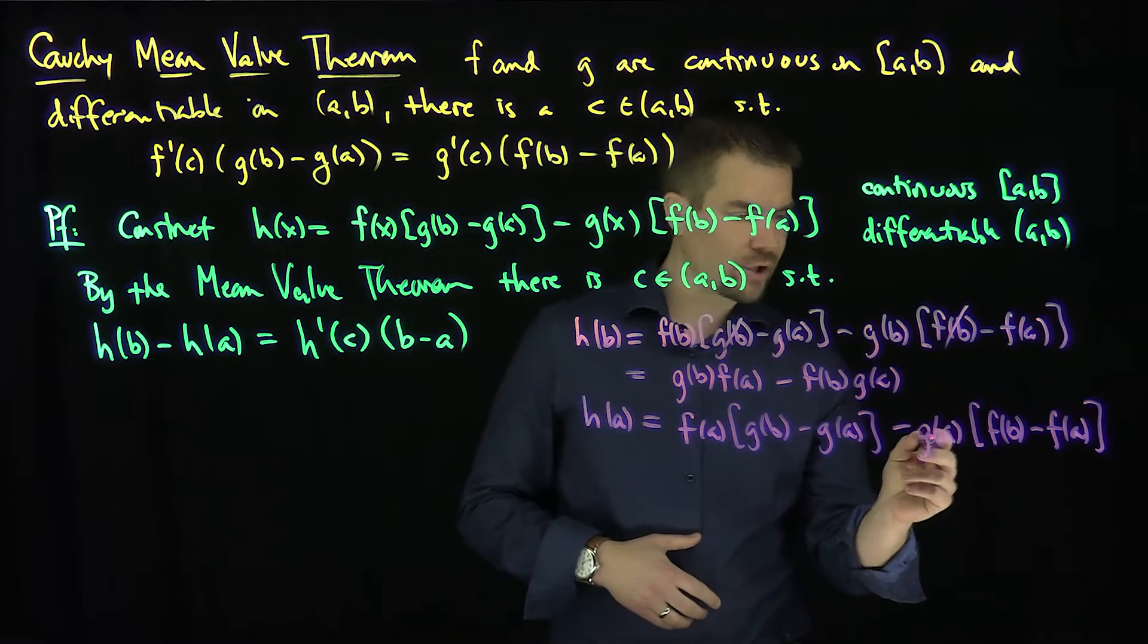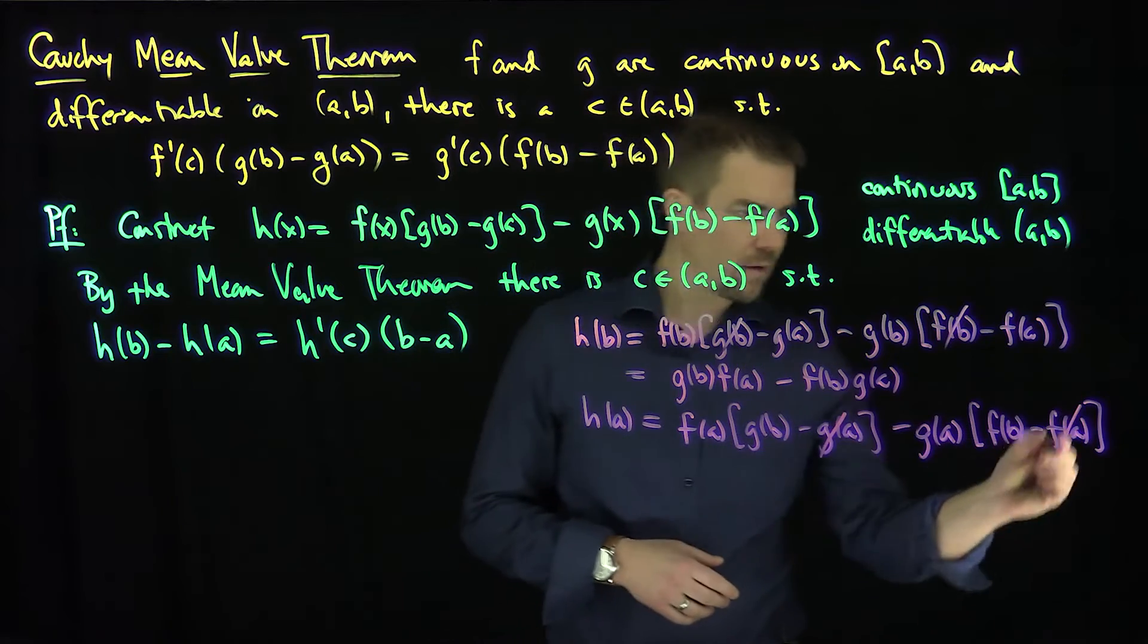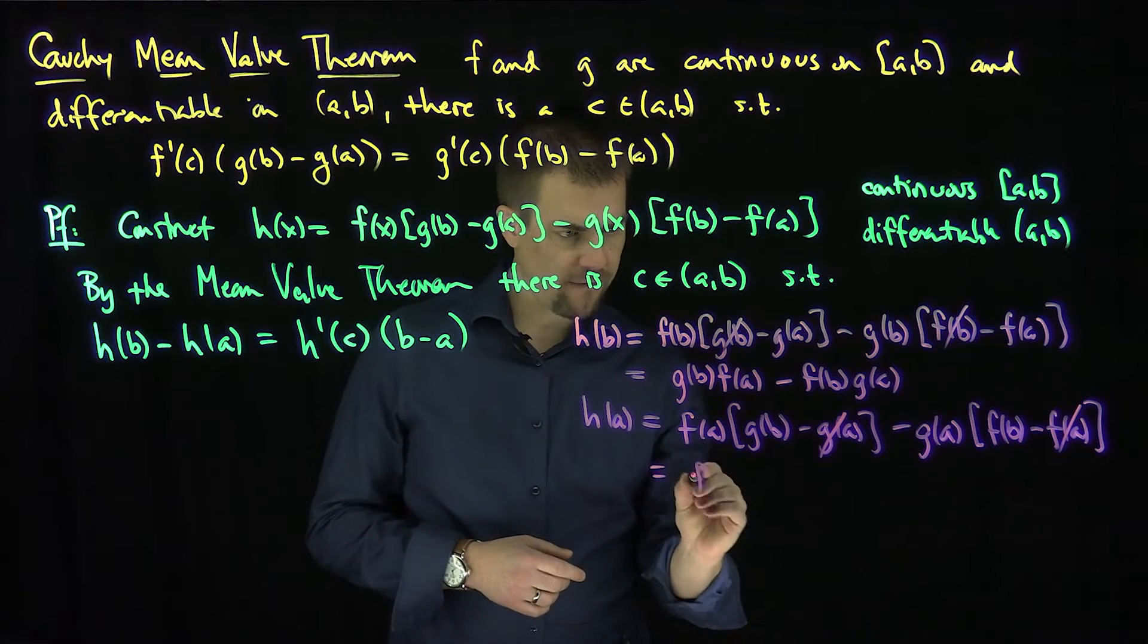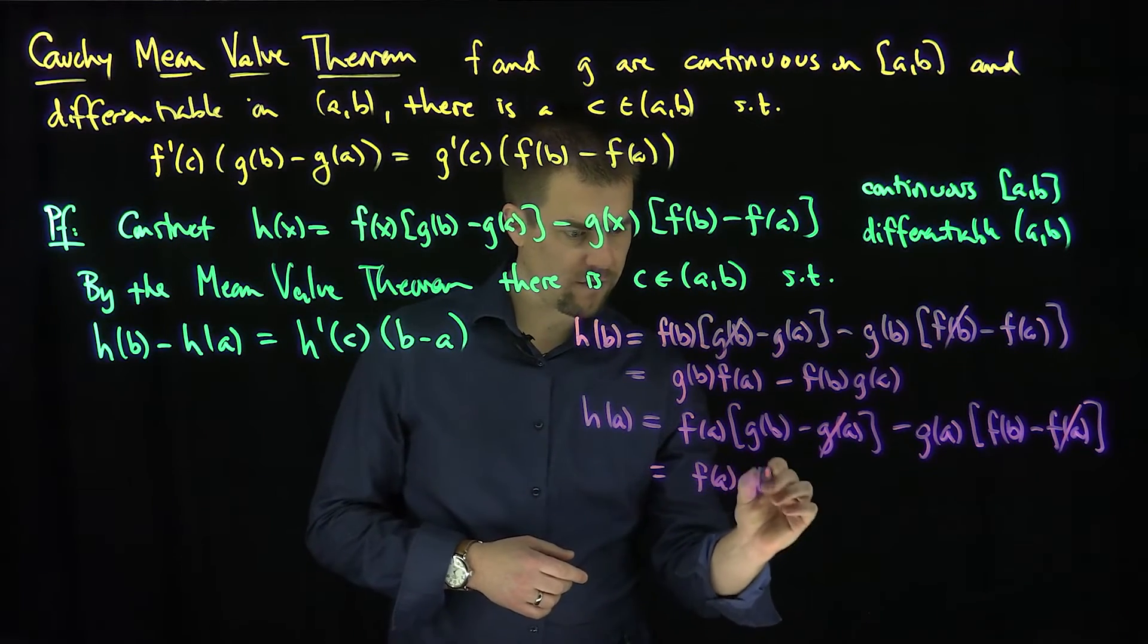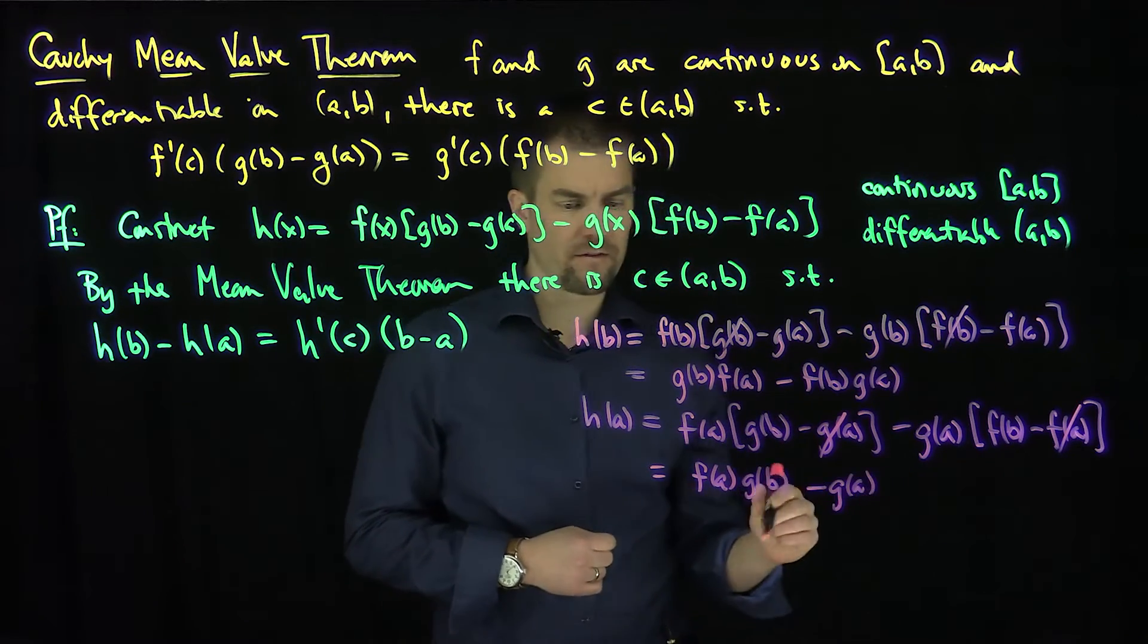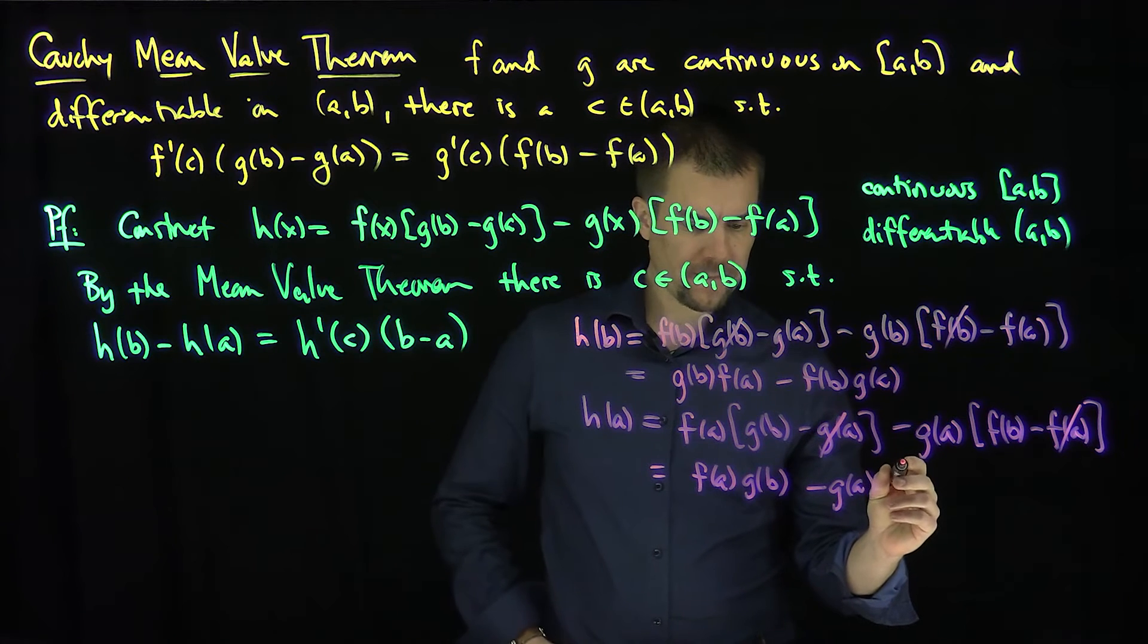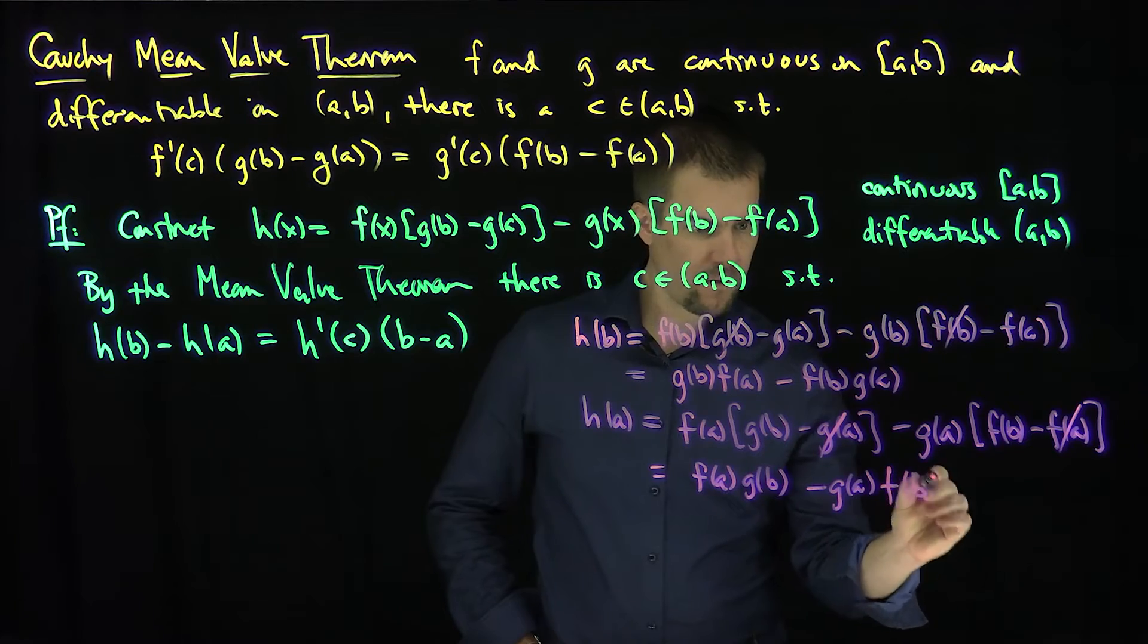Well, I have a positive g(a)f(a), and a negative f(a)g(a). So those are going to cancel out. And we're left with what? We're left with f(a)g(b), and then minus g(a)f(b).